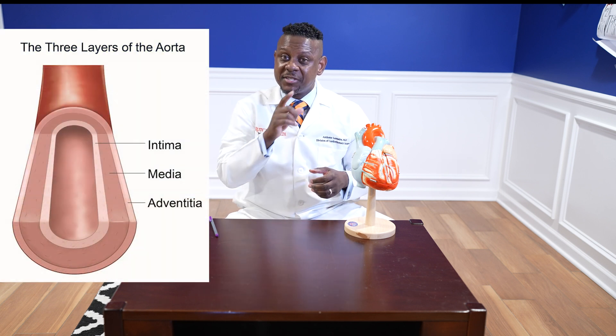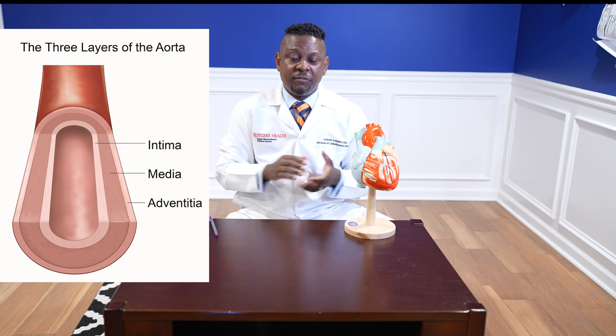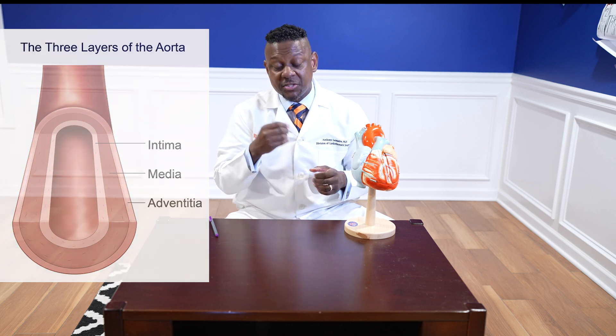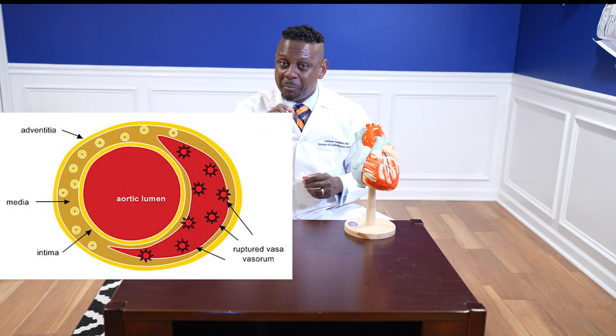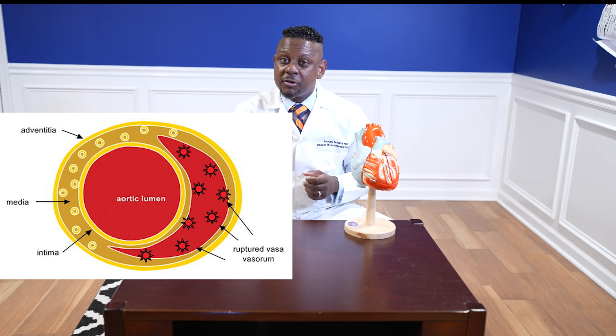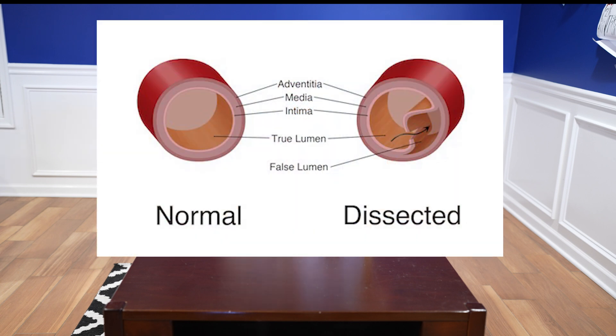Now the aorta is actually made up of three layers. There's an intima, which is the inner layer of the aorta. There's a media, which is the muscle layer of the aorta. And there's the adventitia, which is the outer structural layer of the aorta. When you have an intramural hematoma, that means you have bleeding through the intima — that inner layer — but there's no tear of the intima and there is no true and false lumen. Those two things are seen with an aortic dissection, and that's what makes this more challenging.